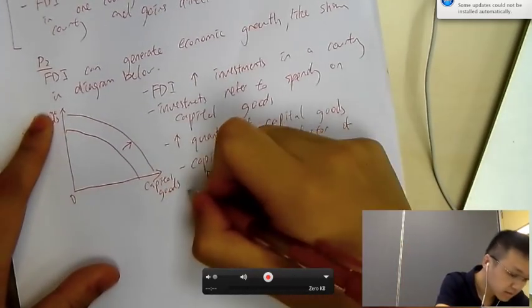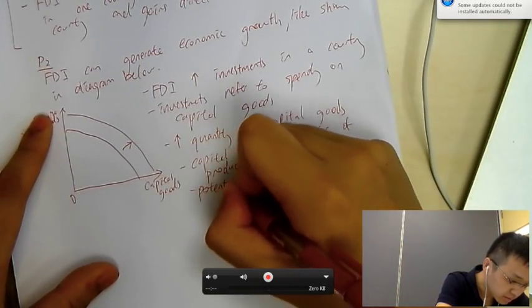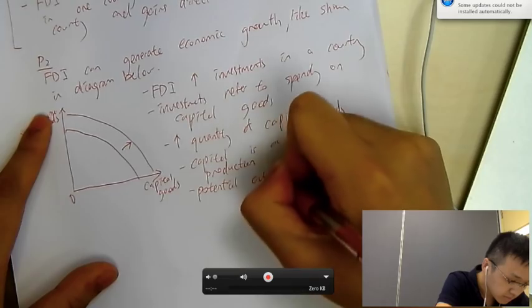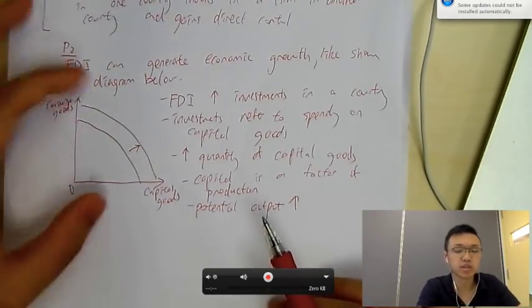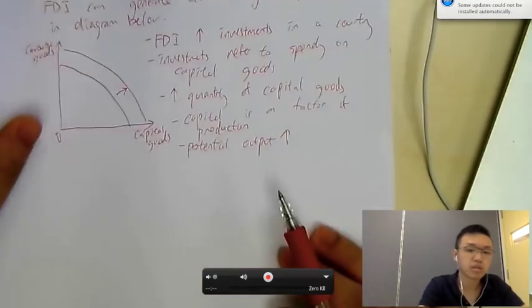So, hence, the potential output is going to rise. Hence, generating economic growth. So, that's shown in this diagram. Third paragraph, another diagram you could draw is about negative externalities.